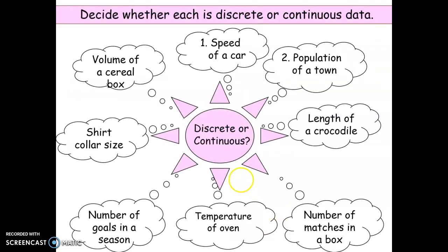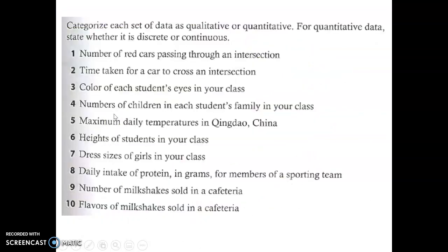Looking at this sample here of different sets of data, I just want you to decide which are discrete, which are continuous. Go in this order around this circle and tell me discrete, continuous for these.